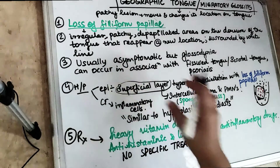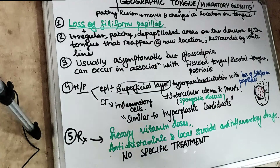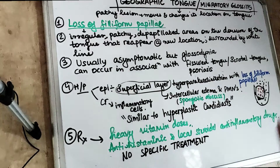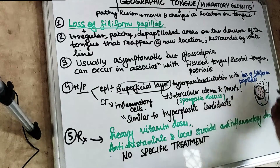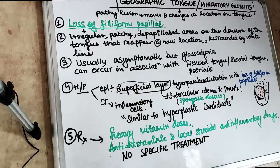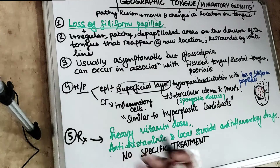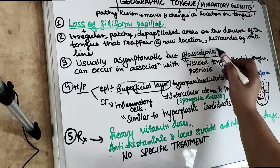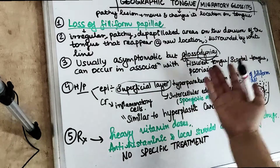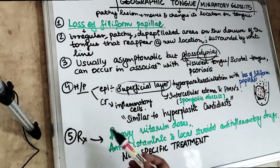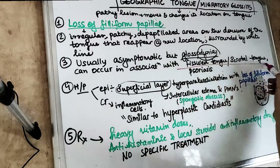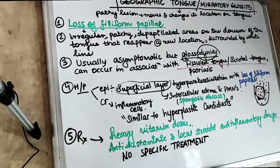So these are basically irregular, patchy, depapillated areas present on the dorsum of the tongue, which keep changing their locations and are usually demarcated with a white line. These lesions are generally asymptomatic, but sometimes patients can complain of burning sensation or soreness in the tongue — known as glossodynia. Geographic tongue can also occur in association with fissured tongue and psoriasis.